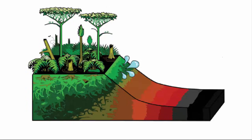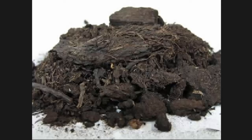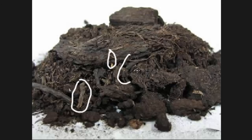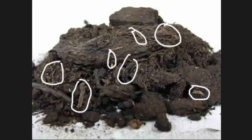The first stage consists of peat, which contains decomposed plant debris like leaves, fern, branches, roots, etc. This material is on its way to becoming coal, but its plant debris sources are still easily recognizable.